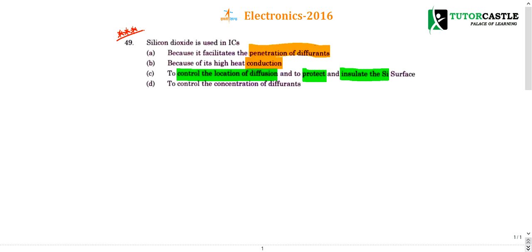I will tell an easy technique by eliminating the options. Silicon dioxide — you already know this if you have studied MOSFETs. SiO₂ acts as an insulator; everybody knows this. So why do we use some material? It should have some purpose, some advantage. Due to that advantage, we are using it in ICs.